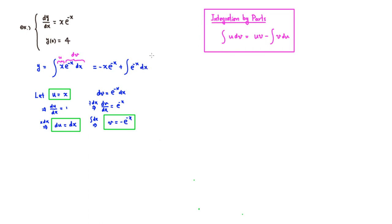We can go ahead and evaluate the second integral. So we have negative x e to the negative x, and the antiderivative of e to the negative x is negative e to the negative x, plus some constant C. That's the best we can do just from the differential equation.